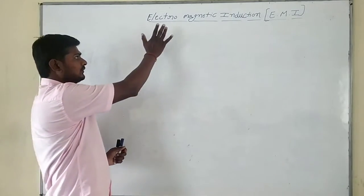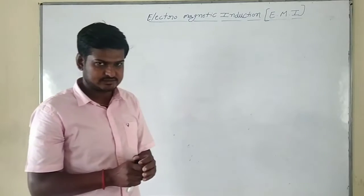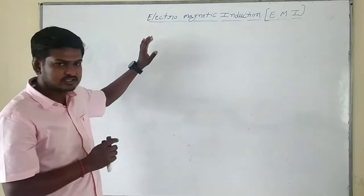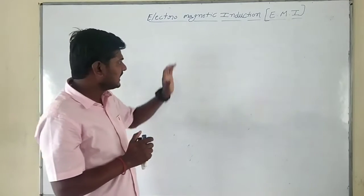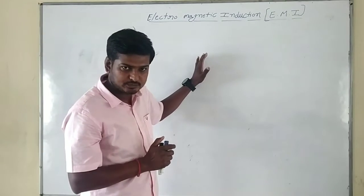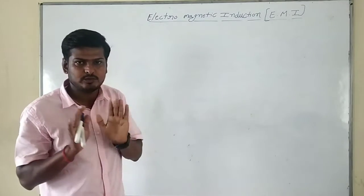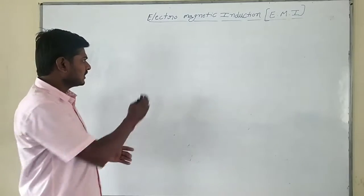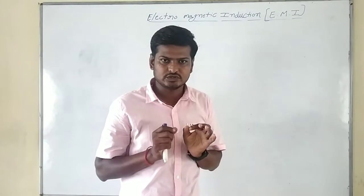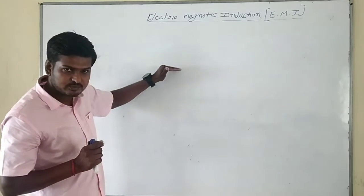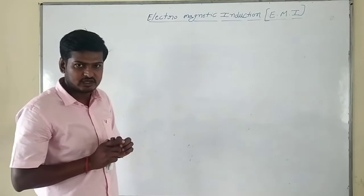Before we go further into electromagnetic induction, let's look into the previous chapters. In the first chapter we discussed electric charges and fields, and the second chapter was electrostatic potential and capacitance. In those chapters we discussed charges that are at rest — when charges are at rest they produce an electric field. Then in the third chapter, current electricity, we discussed charges that are in motion — when charges are in motion they produce current.